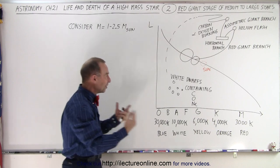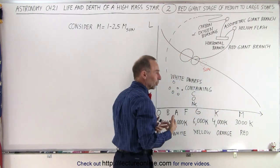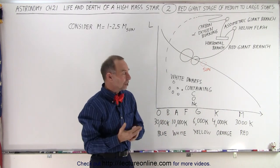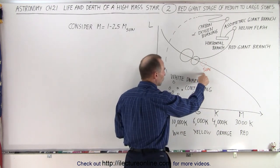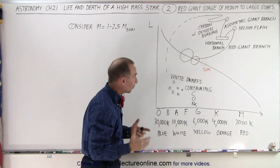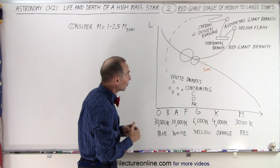So when they finish their journey on the main sequence, in other words, the time that it takes for them to turn hydrogen into helium, it takes about 10 billion years for stars the size of the sun, about a billion years or so for stars about two and a half times the mass of the sun.